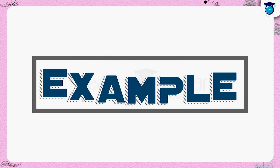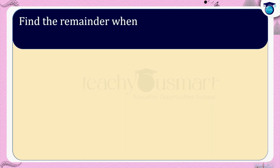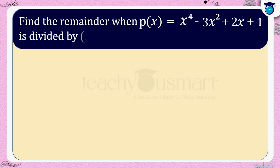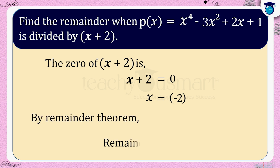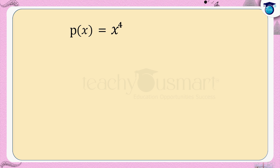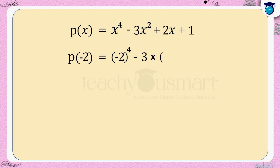For example, find the remainder when p of x equals x raised to 4 minus 3x squared plus 2x plus 1 is divided by x plus 2. First, let us find the zero of x plus 2 — put x plus 2 equals 0, then we get x equals minus 2. Then by the remainder theorem, the remainder is p of minus 2. We have p of x equals x raised to 4 minus 3x squared plus 2x plus 1. So p of minus 2 equals minus 2 whole raised to 4 minus 3 multiplied by minus 2 whole squared plus 2 multiplied by minus 2 plus 1.